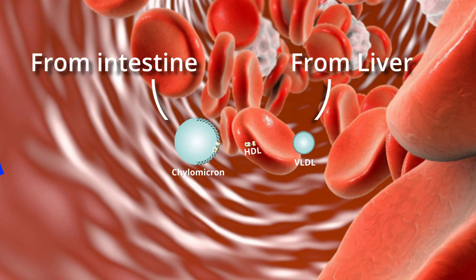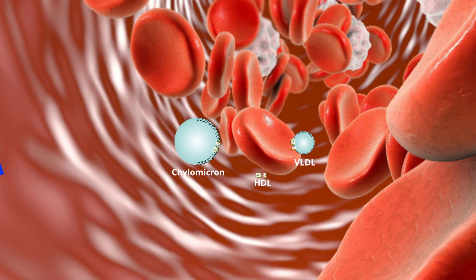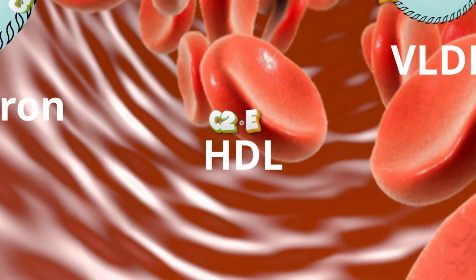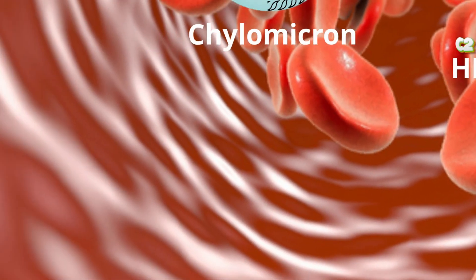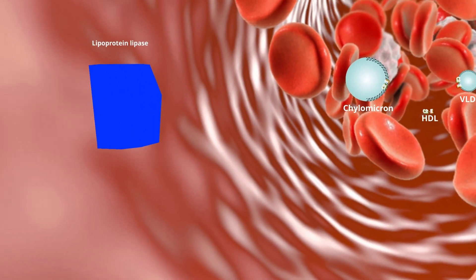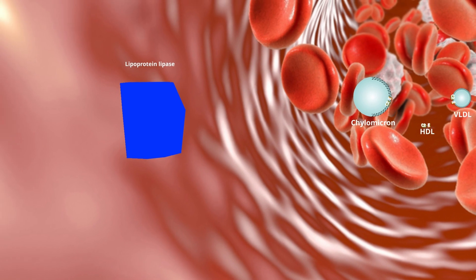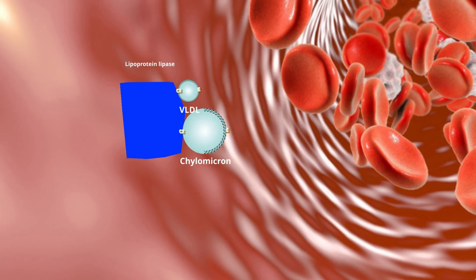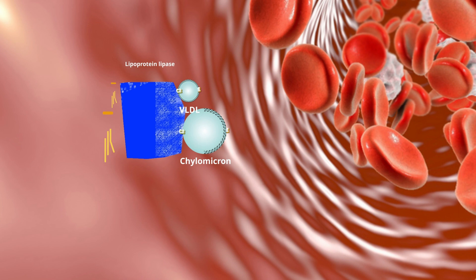Chylomicrons and VLDL take up ApoC2 and ApoE from HDL. Lipoprotein lipase, present in the capillary walls of adipose, muscle, and other tissues, is activated by ApoC2 and hydrolyzes a portion of triglycerides in chylomicrons and VLDL, converting them to chylomicron remnants and IDL, respectively.